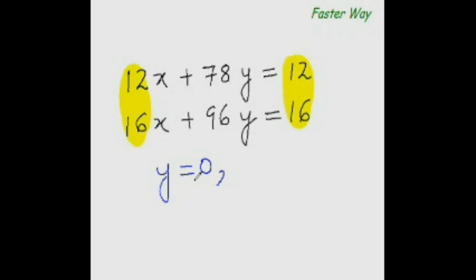Now once you have the value of one variable, finding the other variable is very easy, isn't it? So if you put this value here, this thing becomes 0. So 12x equal to 12, that means 12 times something equal to 12, so obviously 12 times 1 equal to 12, so x equal to 1.